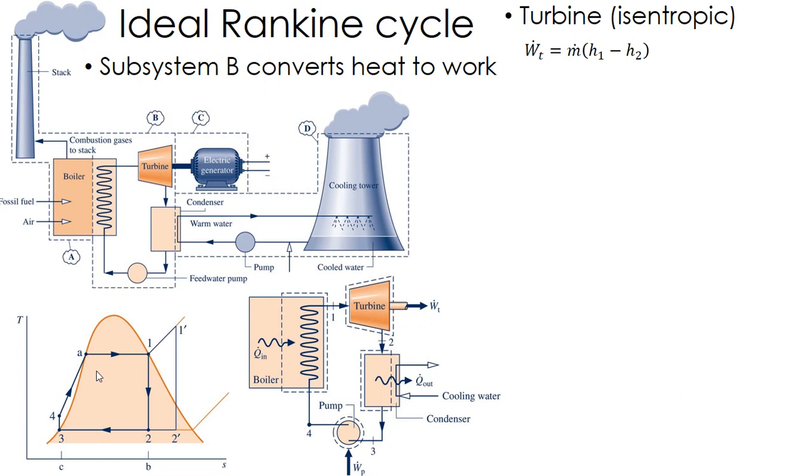So my turbine is isentropic for an ideal Rankine cycle. If it's isentropic, then there's no heat transfer; the work is just delta h.